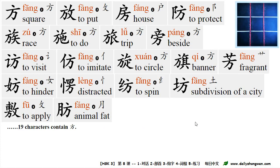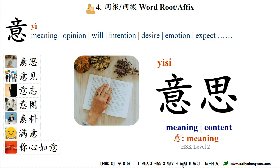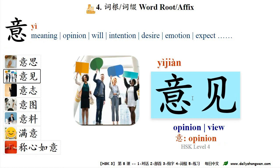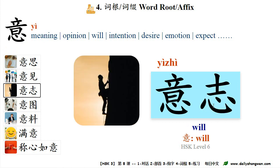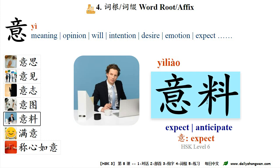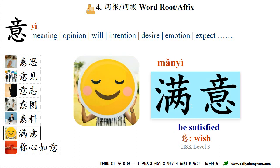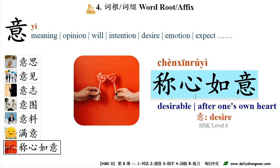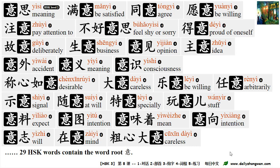Part four, 词根 (word root). The character 意 can be used as a word root to form compound words. For example: 意思 (meaning, content), 意见 (opinion, view), 意志 (will), 意图 (intention, purpose), 意料 (expect, anticipate), 满意 (be satisfied — 意: wish), 称心如意 (after one's own heart, desirable — 意: desire). 29 HSK words contain the word root 意.